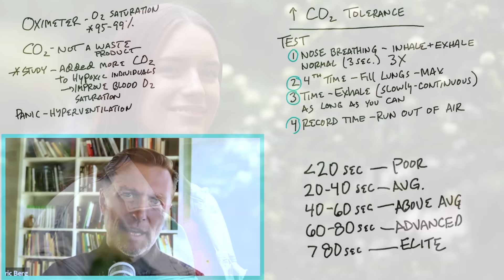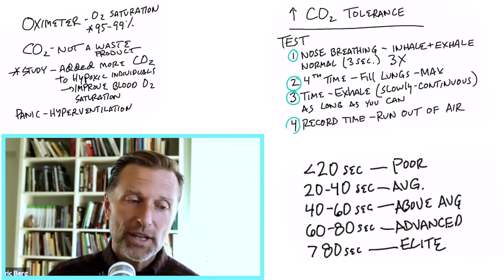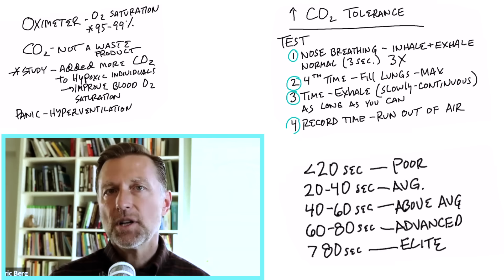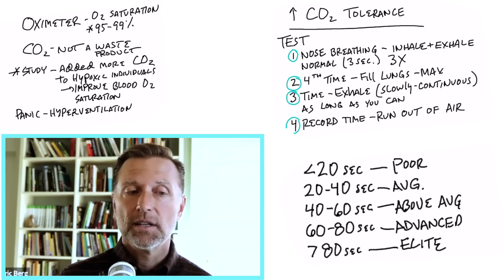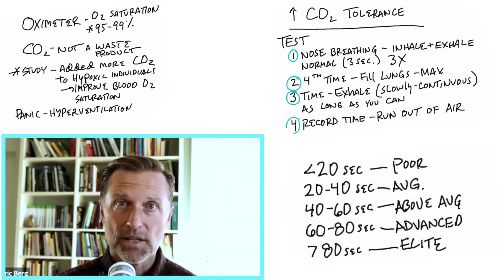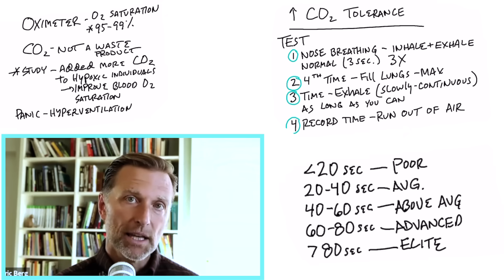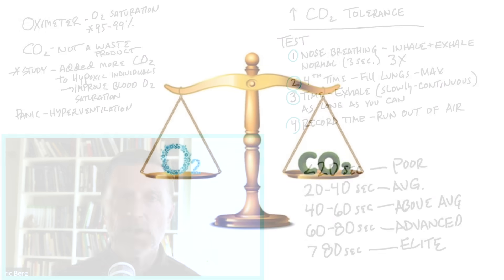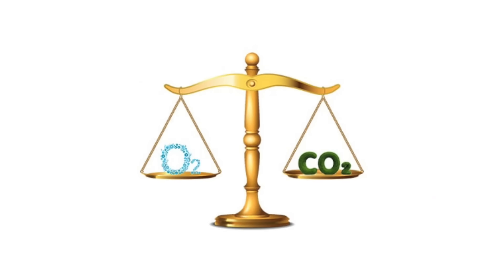So what I want you to do right now is do this test and record your number in the comments down below. I want to read the comments. I want to see results. I want to see where you're at. Now, the question is, how do we increase this tolerance to ultimately increase your ability to get oxygen in your cells? Because it's not just about oxygen. It's about the oxygen availability to the cells, which is dependent on the CO2. And again, we're just trying to balance the CO2 with the oxygen. So a couple of things to do.